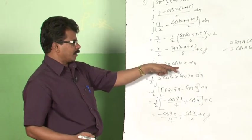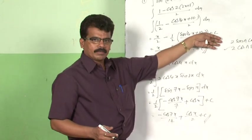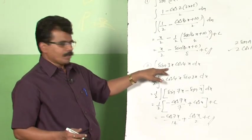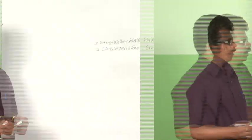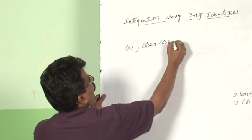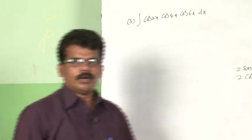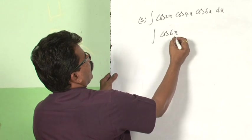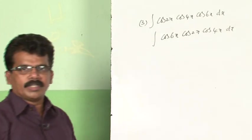When the function is given as a product of trig functions, reduce them using transformation formulas — whether it is sinsin, coscos, or sincos — and then integrate. Otherwise treating it as u·v (integration by parts) would be very lengthy. So it is best to write the product as a sum and then integrate. Now let us see one more example: integral of cos2x·cos4x·cos6x dx, which is a product of three functions.